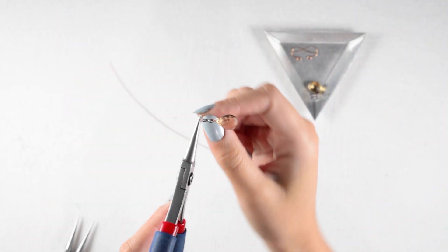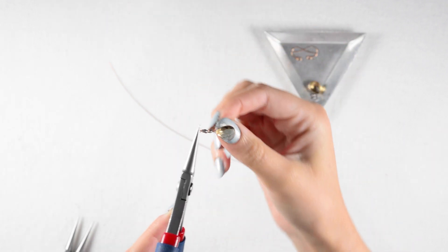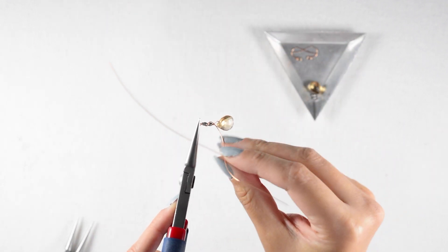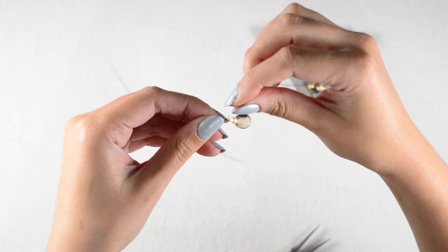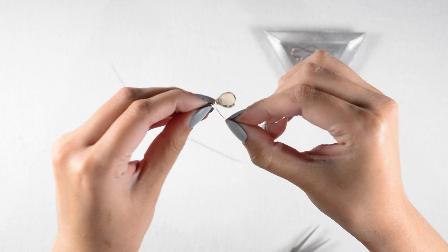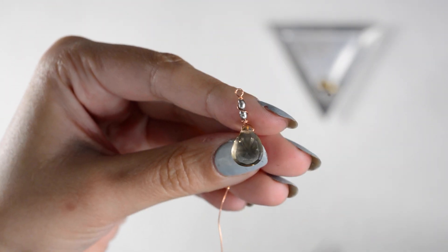I'll coil down one to three times, depending on how much space I have. But then instead of cutting off my excess tail, I'm going to go straight into an orbit wrap. Continuing off of that base wrap, I will spiral my wire down over my two beads. I'll do one full orbit and then secure that wire over top of the bottom wrap.